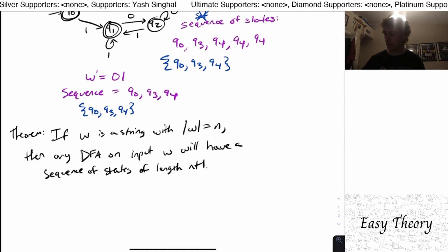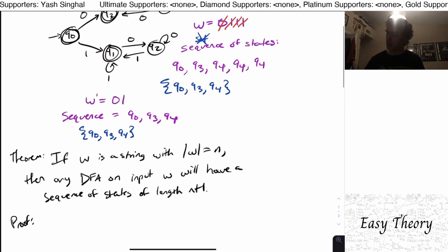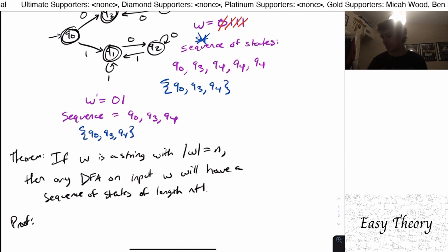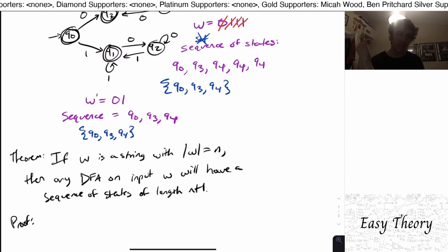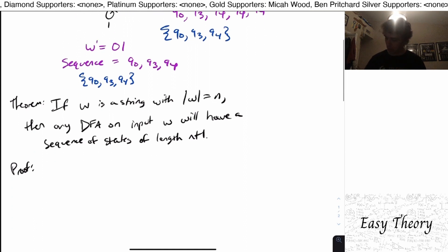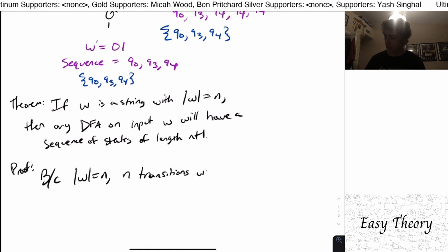And how do we actually prove this? Well, let's see. Well, notice that the length of the input was n. So that means that for each of the transitions, we're always going to consume one character. And since the input here has n characters, that means we're going to take a total of n transitions. So because the length of w is n, n transitions will be taken.